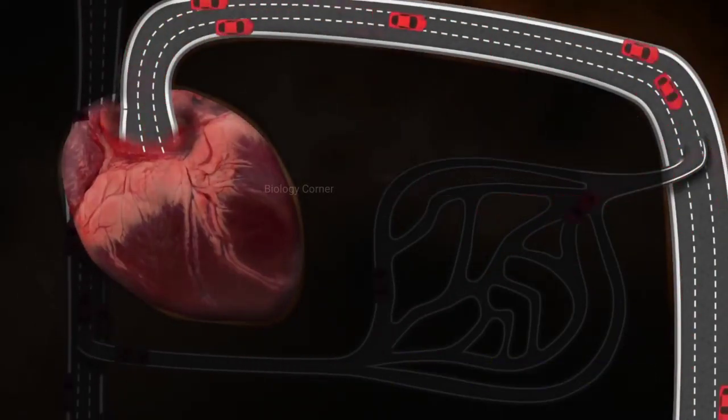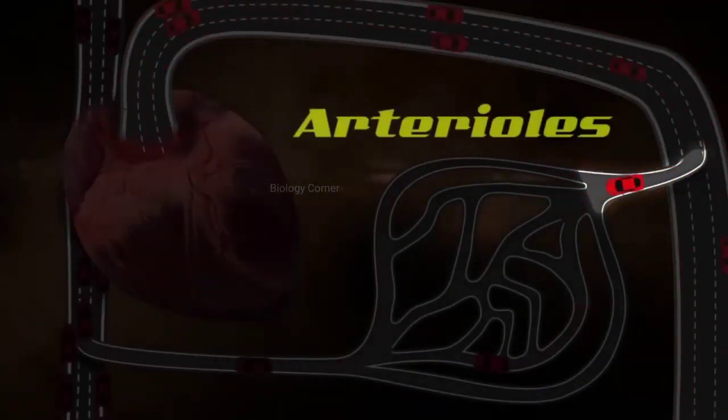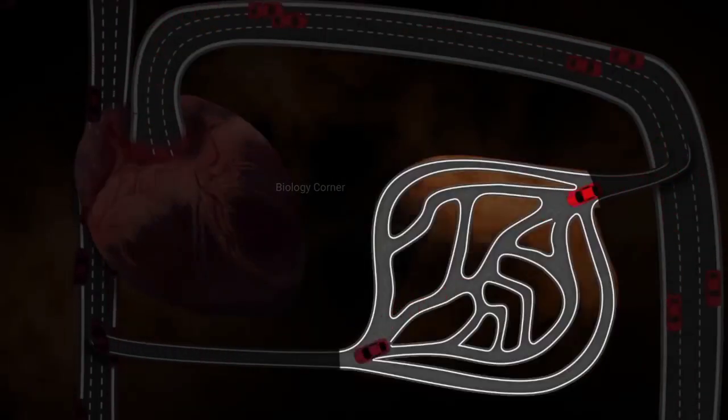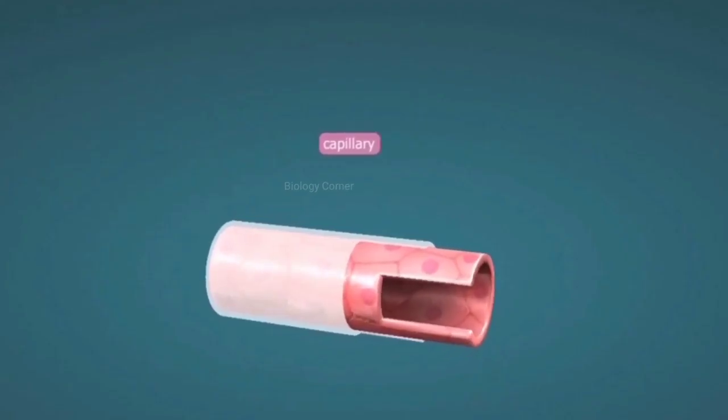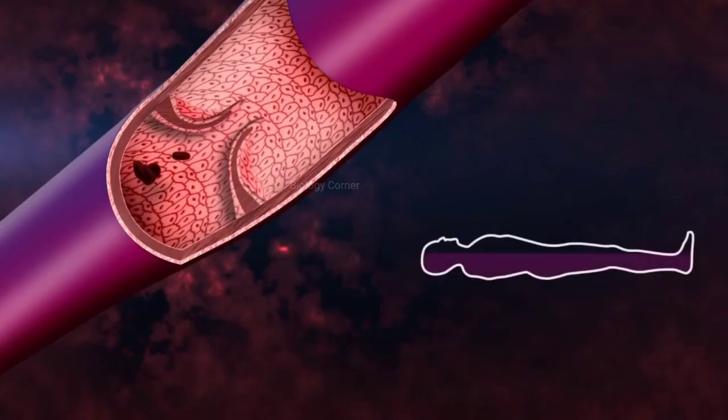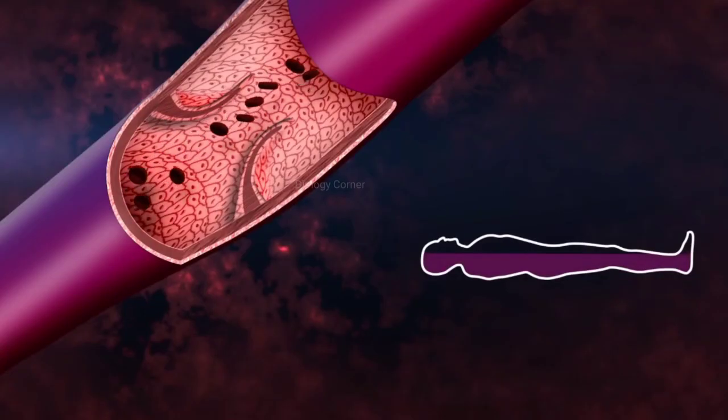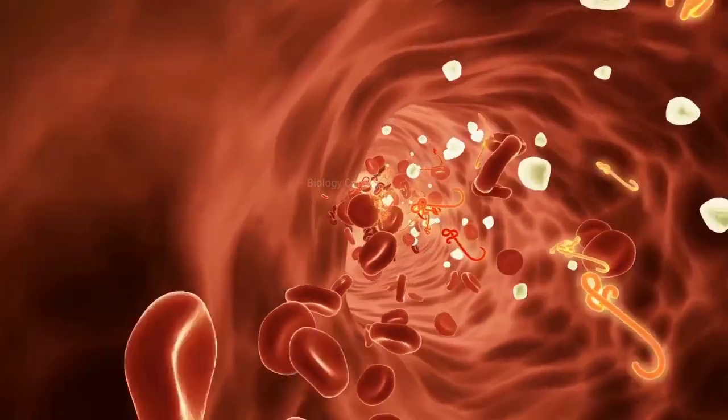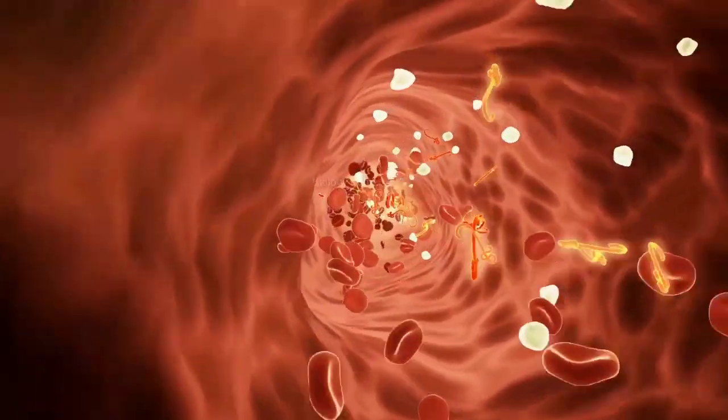Our arteries are further divided into branches called arterioles and these further divide to form capillaries. The wall of capillaries is as thick as a cell and this is the point from where gaseous exchange takes place between blood and tissues. Cells take oxygen from the blood and add carbon dioxide to the blood.